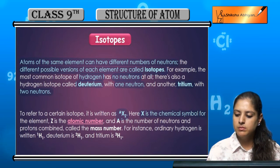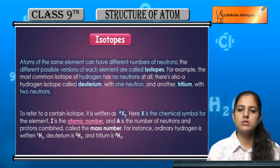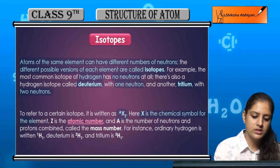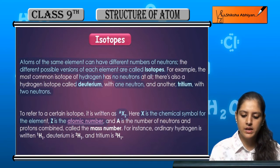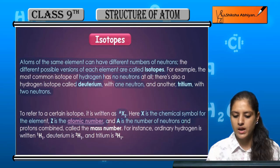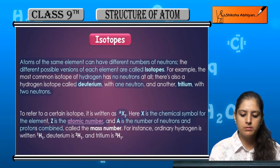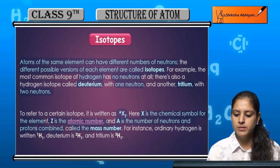X is the chemical symbol for whatever element is being referred to. Z is the atomic number, and A is the number of neutrons and protons combined — that means the mass number.